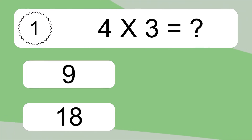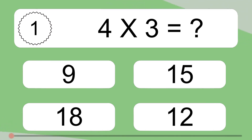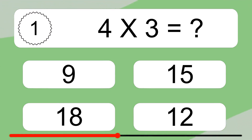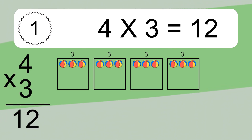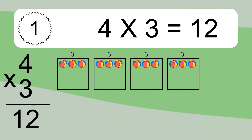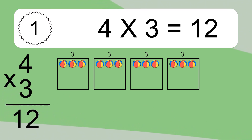4 times 3 equals what? 4 times 3 equals 12. We have 4 boxes, and each box has 3 colorful balls inside. If you count all the balls in all the boxes together, you will have 4 times 3 balls. This equals 12 balls.